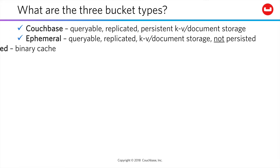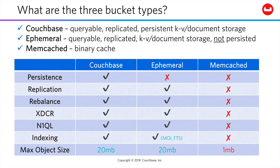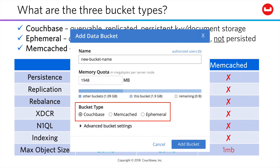Couchbase supports three bucket types: Couchbase, ephemeral, and memcached. Couchbase buckets are the normal form, passing values to disk for persistence. Ephemeral buckets are also supported for fully in-memory datasets that are nonetheless queryable, indexable, and replicable. Couchbase also continues to support memcached as a bucket type for the narrowly focused caching scenarios that they support. The bucket type is designated during bucket creation.